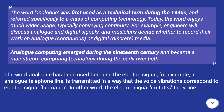For example, engineers discuss analog and digital signals, and musicians decide whether to record their work on analog — continuous — or digital — discrete — media. Analog computing emerged during the 19th century and became a mainstream computing technology during the early 20th century.